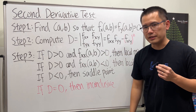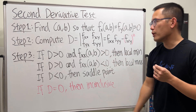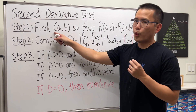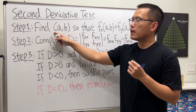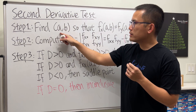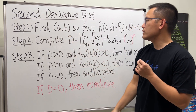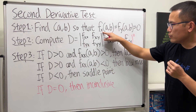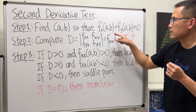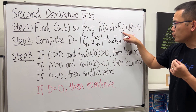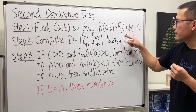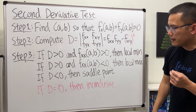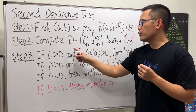Step one: we are going to find the critical points — that's a point (a, b) — such that the partial derivative of f with respect to x and the partial derivative with respect to y are both equal to zero.